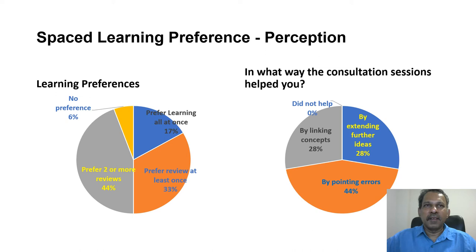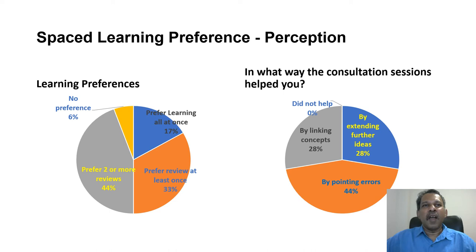Now let's move on to learning preferences. 17% of students wanted all concepts delivered in the first three weeks, which is consistent with many other researchers. Although students prefer to have everything delivered at once, the results tell a different story — many researchers and scholars have noted this discrepancy between student preferences and the actual effect of spaced learning. When it comes to revision, 33% preferred at least one revision and 44% preferred more than two revisions — altogether 77% preferred at least one revision, which reinforces the concept of spaced learning.